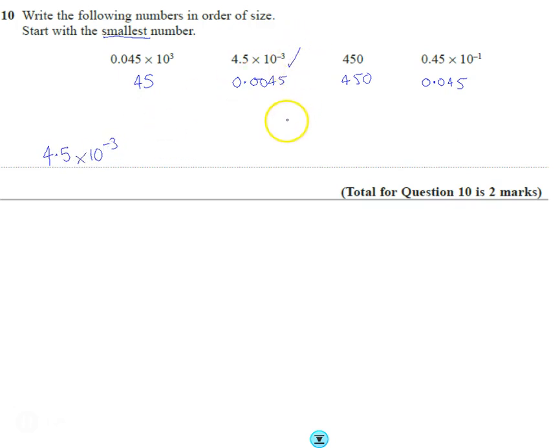So we've done that one. Then we've got 0.45 times 10 to the minus 1, so we've used this one.